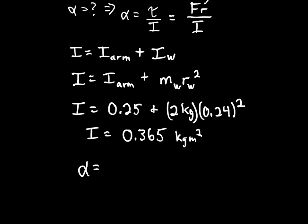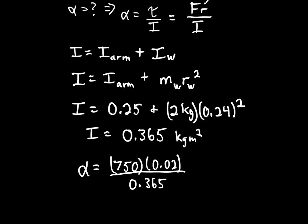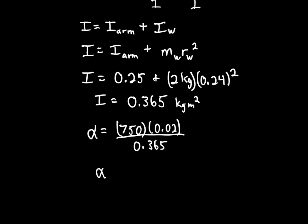Alpha equals torque over I: 750 times 0.02 divided by 0.365. That gives alpha equals 41.1 radians per second squared.